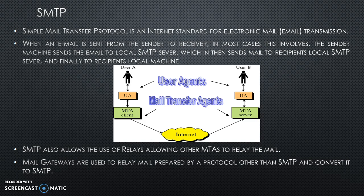SMTP — Simple Mail Transfer Protocol. It is an internet standard for electronic mail transmission. When an email is sent from the sender to receiver, in most cases the sender's machine sends the email to the local SMTP server, which then sends the mail to the recipient's local SMTP server, and finally to the recipient's local machine. A user agent helps the entire process of SMTP. SMTP also allows the use of relay, allowing other MTAs to relay the mail. Mail gateways are used to relay mail prepared by protocols other than SMTP and convert it to SMTP.